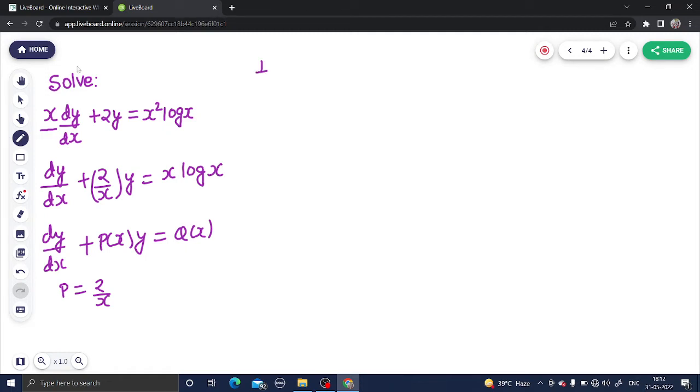So what we do in this type of question, we just find the integrating factor first, which is nothing but e^(∫P dx). P is 2/x, so ∫(2/x)dx. Here 2 can easily come out; integral of 1/x dx everyone on earth knows that is log(x), so e^(2log x).